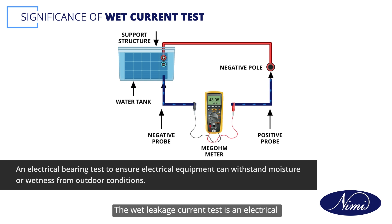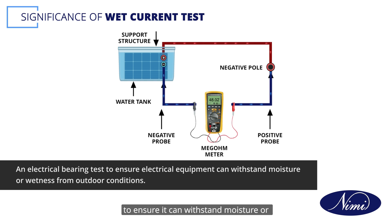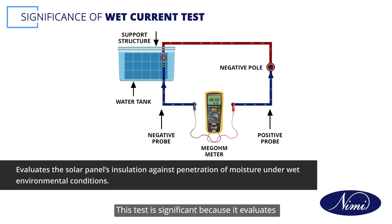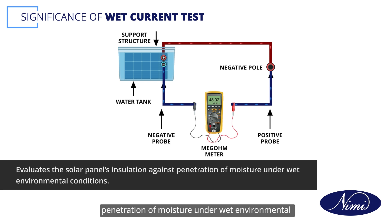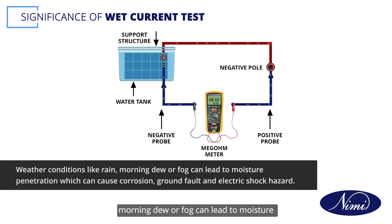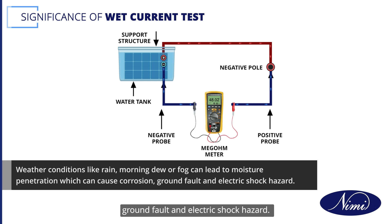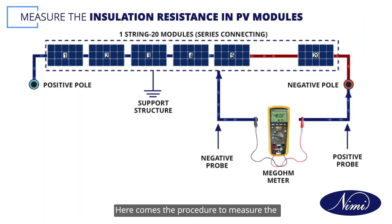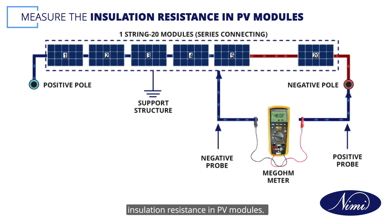The wet leakage current test is an electrical bearing test on various electrical equipment to ensure it can withstand moisture or wetness from outdoor conditions. This test is significant because it evaluates the solar panel's insulation against penetration of moisture under wet environmental conditions. Weather conditions like rain, morning dew, or fog can lead to moisture penetration, which can cause corrosion, ground fault, and electric shock hazard.